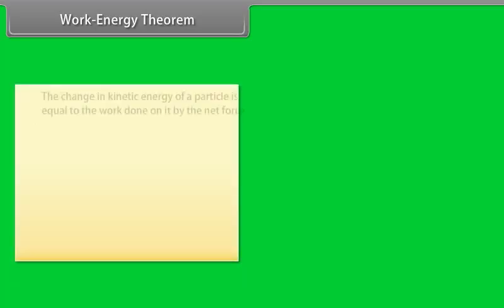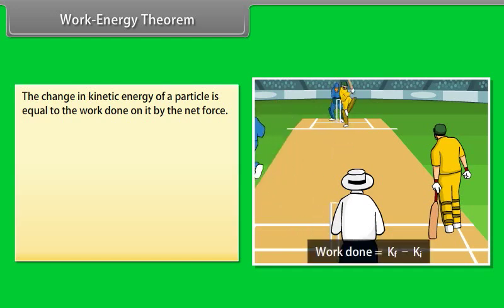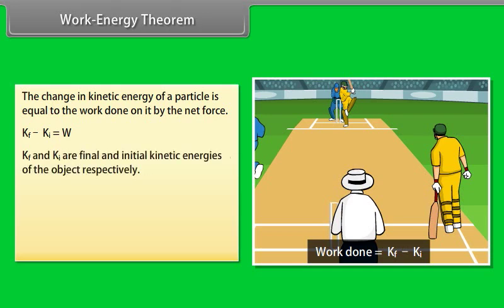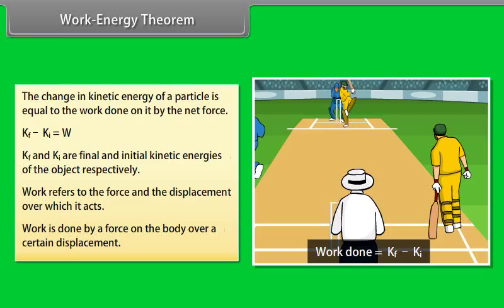Work energy theorem. The change in kinetic energy of a particle is equal to the work done on it by the net force. Kf - Ki = W. Here Kf and Ki are final and initial kinetic energies of the object respectively. Work refers to the force and the displacement over which it acts. Work is done by a force on the body over a certain displacement.